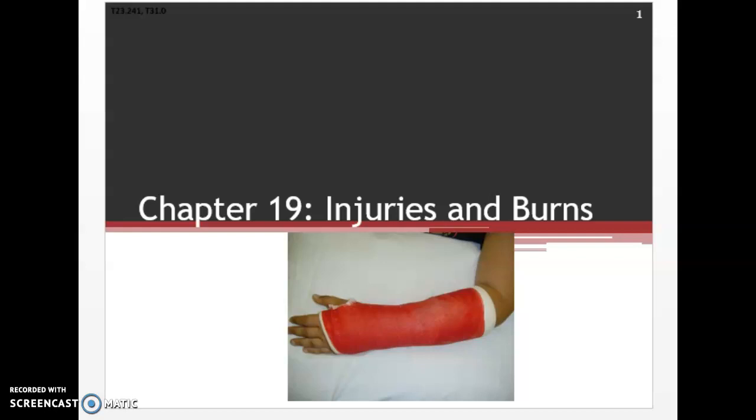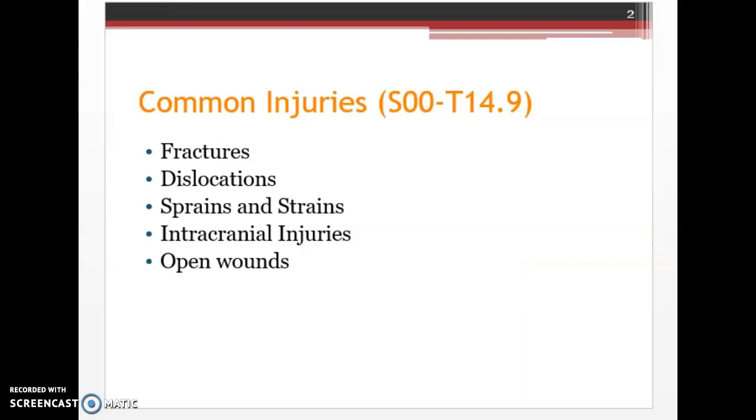Hello, everyone, and welcome to our ICD-10-CM lecture on Coding Injuries and Burns, or Chapter 19 of the ICD-10-CM Coding Manual. Some common injuries that you will see as a coder are fractures, dislocations, sprains and strains, intracranial injuries, and open wounds. The codes for these will range between the characters S00 through T14.9.